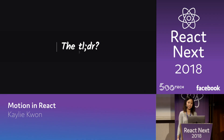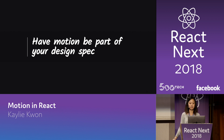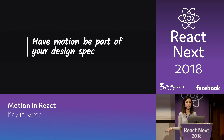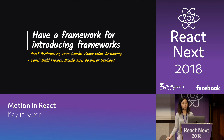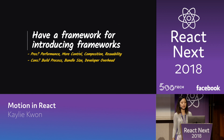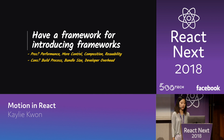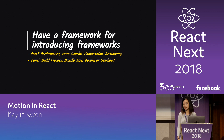The TLDR of this talk is to have motion be part of your design spec. With concepts like GraphQL and React Suspense, you have these different loading states waiting for data fetching to occur — and that's just an additional slice of time you could use to delight the user with motion. Secondly, you want to have a framework for introducing frameworks. While all of the libraries are cool, you really want to balance the pros — like performance, more control, composition, and reusability — with the cons, like introducing a more complex build process, getting a bigger bundle size, or increasing developer overhead.